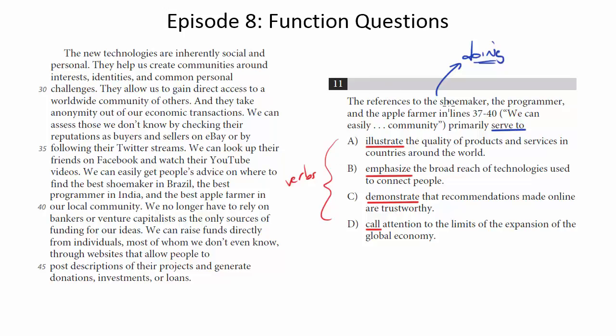So let's take a look at this question. The references to the shoemaker, the programmer, and the apple farmer in lines 37 to 40 primarily serve to what. So let's go ahead and underline just these lines so we can pay extra attention to them. And let's read from the beginning of this paragraph.